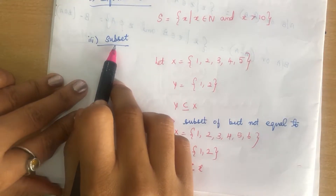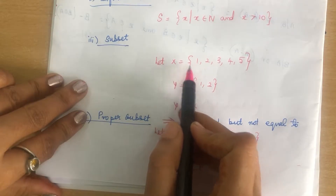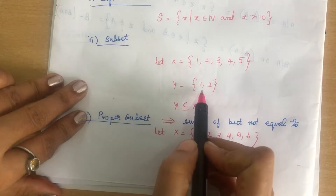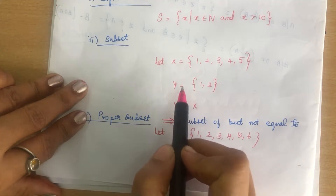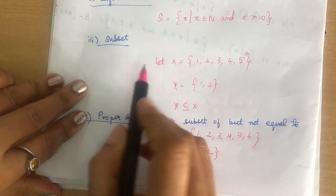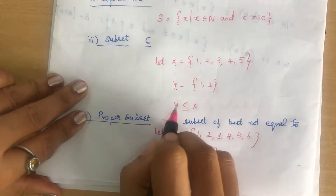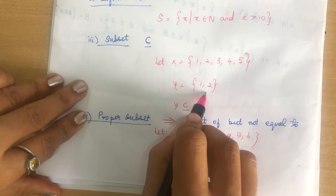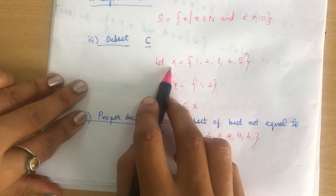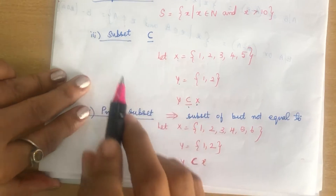The third type is subset. For example, if X contains elements {1, 2, 3, 4, 5} and Y contains {1, 2}, we can say Y is a subset of X. We use a special symbol to represent subset. All elements in Y are also in X, so Y is a subset of X.